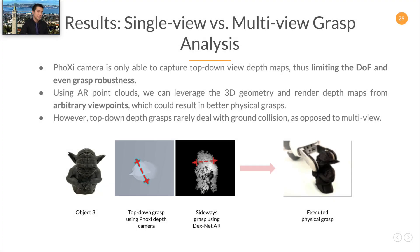Now let's analyze the results of single-view grasps and multi-view grasps. Specifically, we compare ground truth depth images and AR-based depth images. Using an example of object three, we see that the Foxy depth camera is only able to capture top-down view depth, thus limiting the degrees of freedom and grasp robustness. We also see that the top-down planned grasp collided with the nose and ear areas of the Yoda model. In contrast, the sideways grasp planned by DexNet AR avoided those areas, resulting in a more robust grasp.